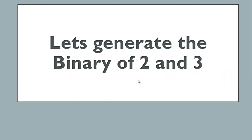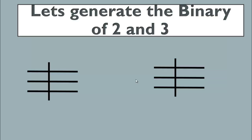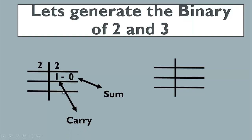Now let's learn how to generate the binary of two and three, since we said one plus one gives zero sum and one carry. To generate the binary of two, we use successive division by two. Two divided by two gives zero remainder — that zero is taken as the sum and one as the carry.